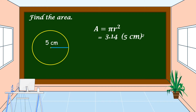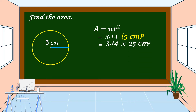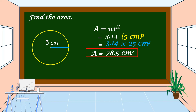Let's solve. First bring down 3.14, then 5 centimeters times 5 centimeters is equal to 25 centimeters squared. So let's multiply 3.14 times 25 centimeters squared. Our area is equal to 78.5 centimeters squared. This is the area of this circle if the radius is 5 centimeters.